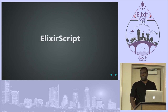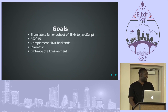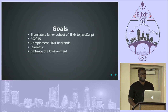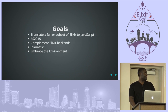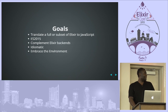This presentation is on ElixirScript, and ElixirScript is an Elixir to JavaScript compiler. The goals of the project are to translate a full or subset of Elixir to JavaScript — getting as much as possible, but not worrying about things that don't map over. We target ES2015, the latest version of the ECMAScript standard. The goal is to complement an Elixir backend, coming up with disciplined ways to talk back to it — not necessarily using REST or JSON. And it should be idiomatic, so writing ElixirScript should look and feel like writing actual Elixir code, while embracing the environment.